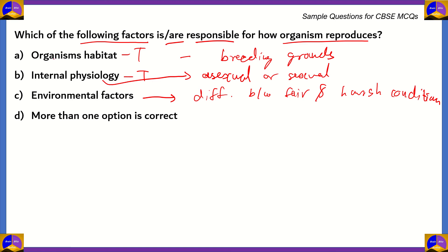But there is a problem. If you were to select option A as the correct answer, that means internal physiology and environmental factors would be considered incorrect, which is wrong. Similarly, if you click B or C, you'll be excluding the other options. So options A, B, and C cannot individually be correct. The only option that's correct is option D — more than one option is correct. Once you recognize that all these factors are important, also note that the question says 'is or are,' which tells us more than one factor can be possible. So you can directly pick option D. The framing of the question is very important when attacking it for the answer.